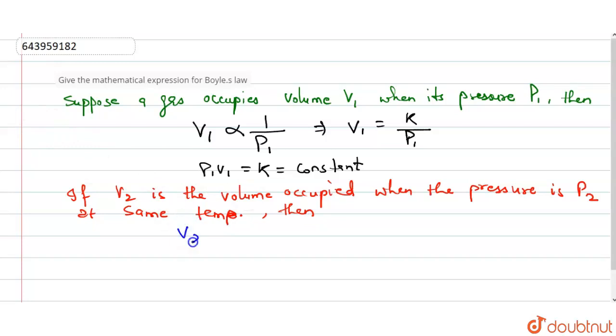Then V2 will be inversely proportional to P2, same as before. K is the proportionality constant here. So we will have P2V2 is equal to K, which is constant.